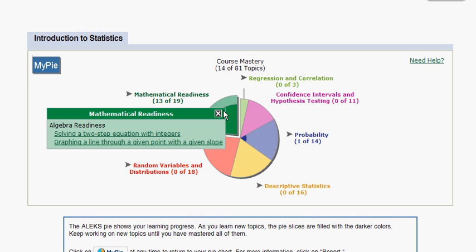Okay, continuing on in the green slice, we will see now that we have the option graphing a line through a given point with a given slope.